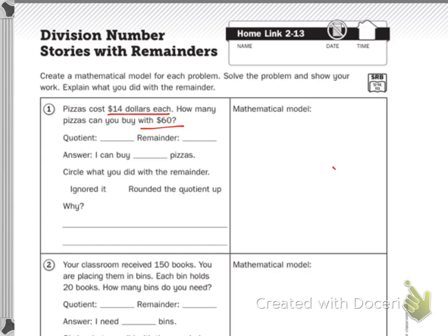So I have 60. So my total, the number I'm dividing is 60 by the $14 per pizza.